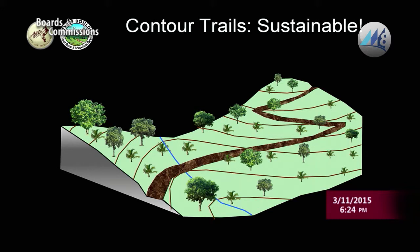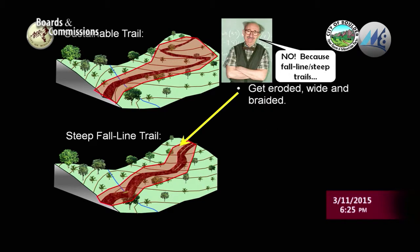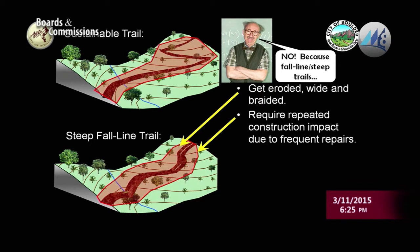One question we sometimes hear is: if we have to switchback up a section of land, doesn't that have more impact than climbing straight up? In a short-term perspective, yes, but in the long term, no — steep trails are much more prone to erosion. When trails erode, people don't want to walk in them; they walk next to it, causing widening and braiding, and more impact. It requires repeated construction — moving rocks and building steps — causing additional impact from our activity.